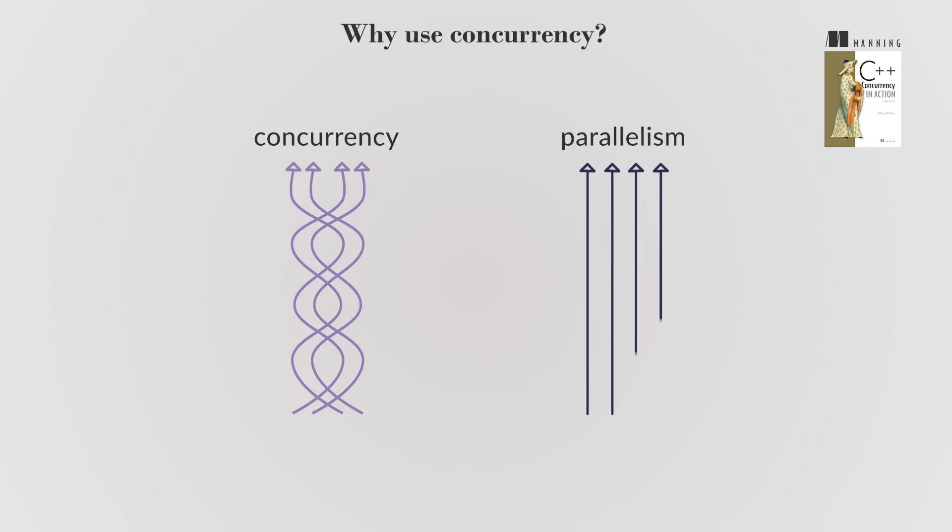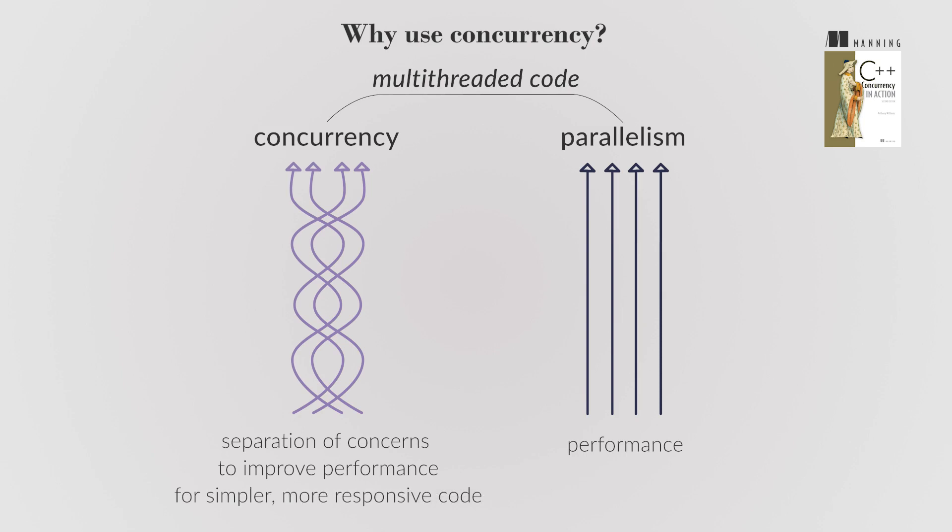Concurrency and parallelism are related concepts in multi-threaded code. With parallelism focusing on performance, concurrency is used in applications to separate concerns and improve performance, making code simpler and more responsive.